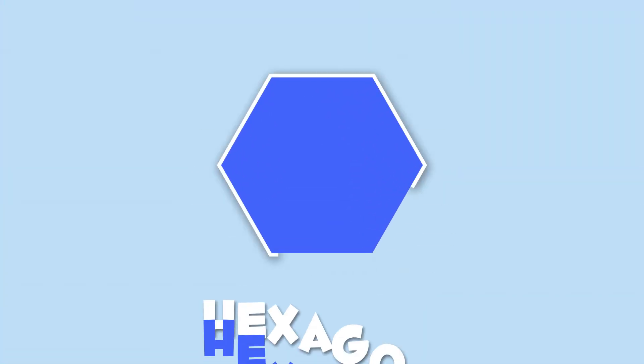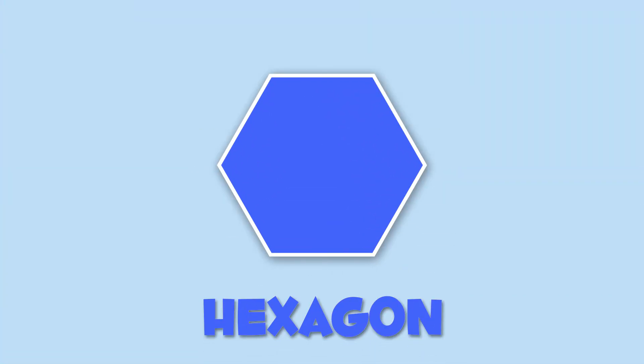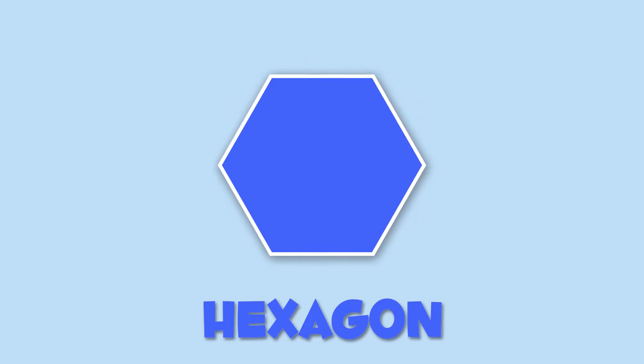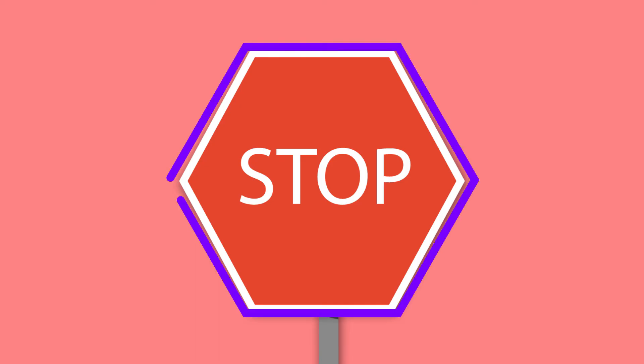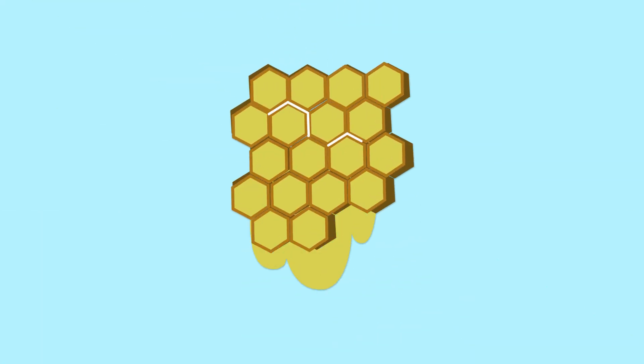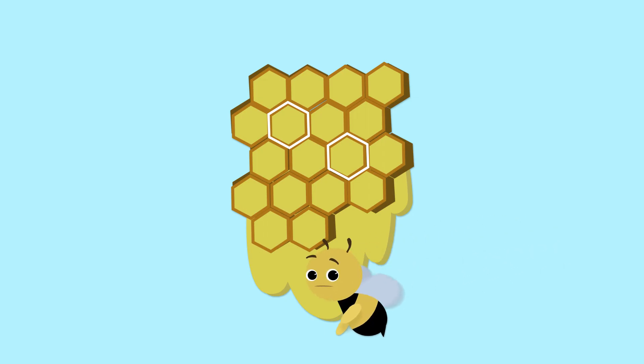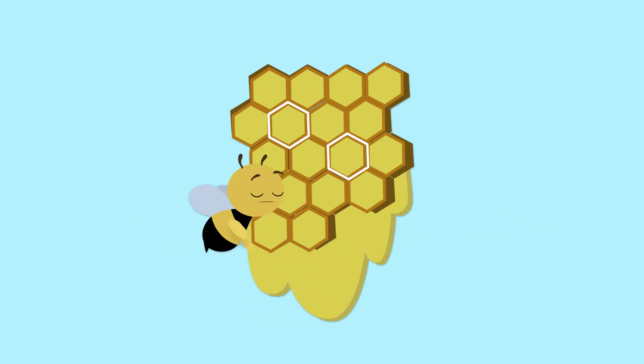Finally, I'll show you the hexagon. Hexagons have six sides. A hexagon is like this stop sign, or like this beehive. We better go now — bees are getting angry!